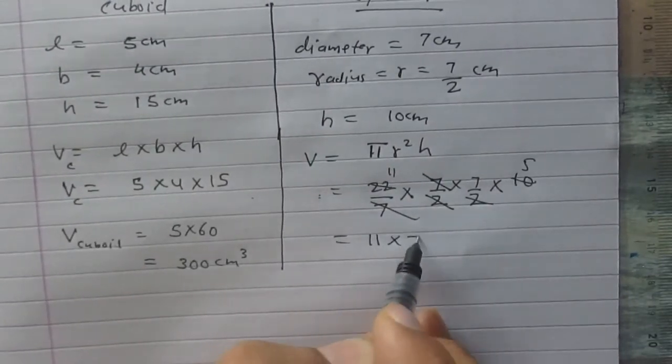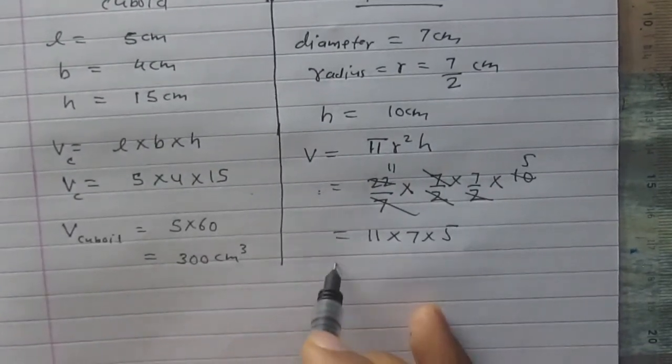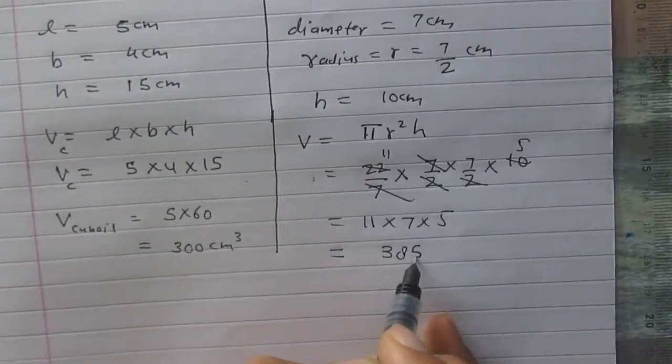This gives us 11 × 7 × 5. After calculation, we get 385. So the volume of the cylinder is 385 cm³.